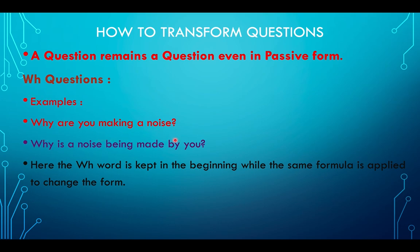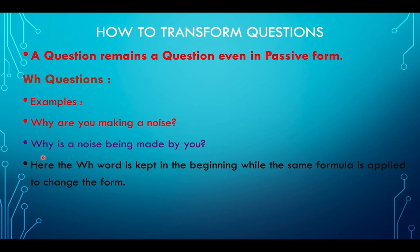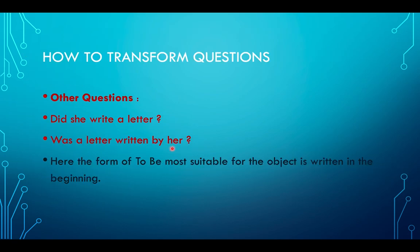WH questions — examples: 'Why are you making a noise?', 'How are you?' — how, what, why, when, who — all these are WH questions. Here the WH word remains at the beginning; you do not have to change it. The only exception is 'who', which changes into 'by whom'. Otherwise the WH word stays at the front, and then the rest of the passive formula is applied just as it was for assertive sentences.